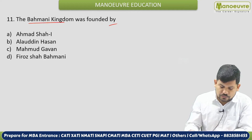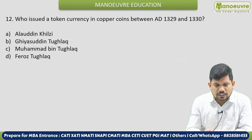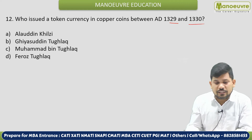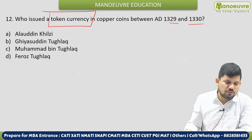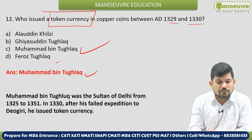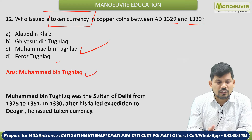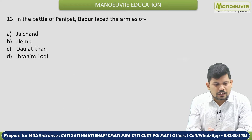Next: The Bahamani Kingdom was founded by whom? The correct answer is Alauddin Hasan — Alauddin Hasan founded the Bahamani Kingdom. Next: Who issued token currency in copper coins between 1329 AD and 1330 AD? This token currency decision is very famous as a foolish decision. This king is also known as an eccentric king in history. The correct answer is Muhammad bin Tughlaq — he is famous for three failures: capital change from Delhi to Daulatabad, token currency, and increasing the Doab tax.